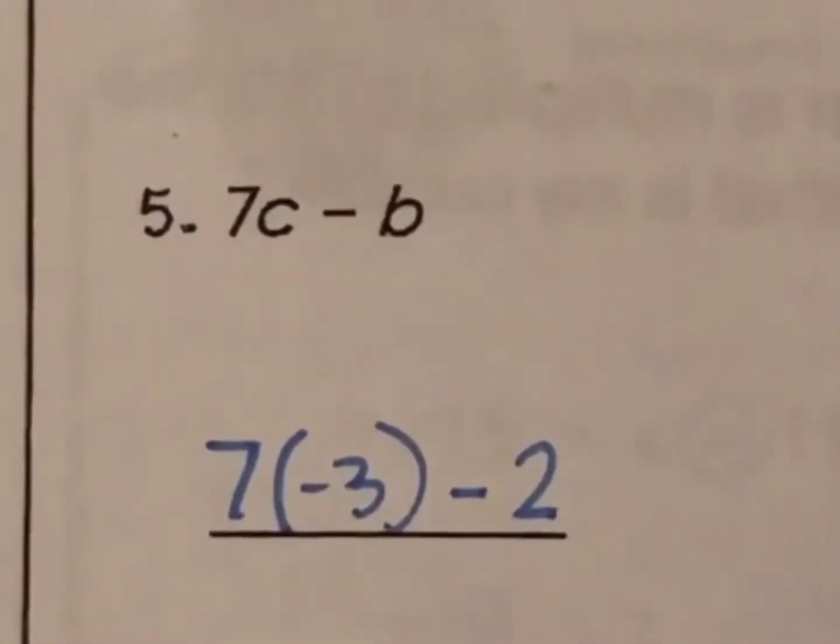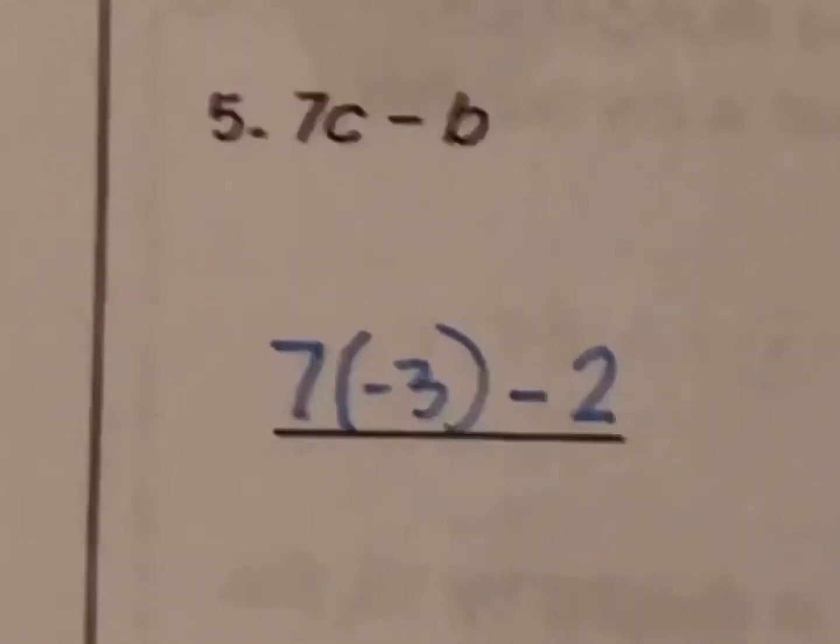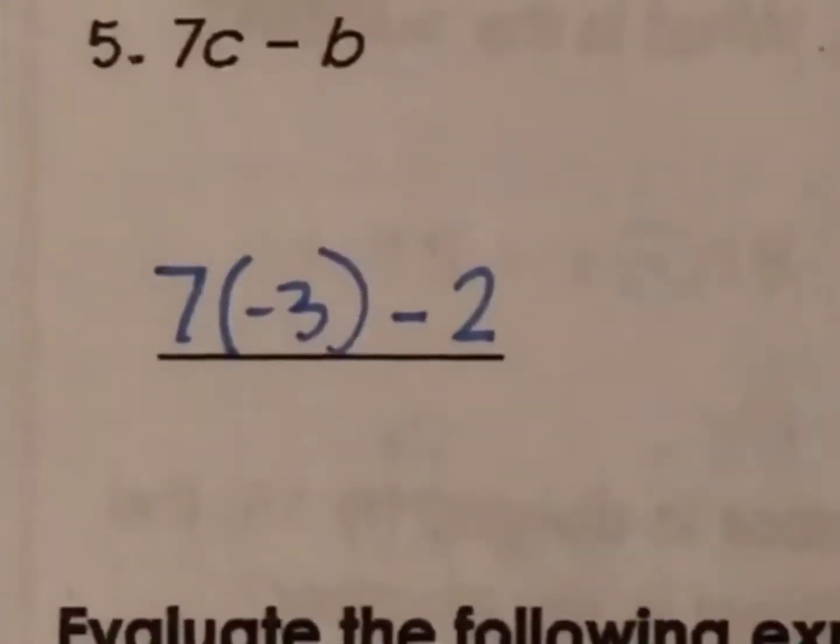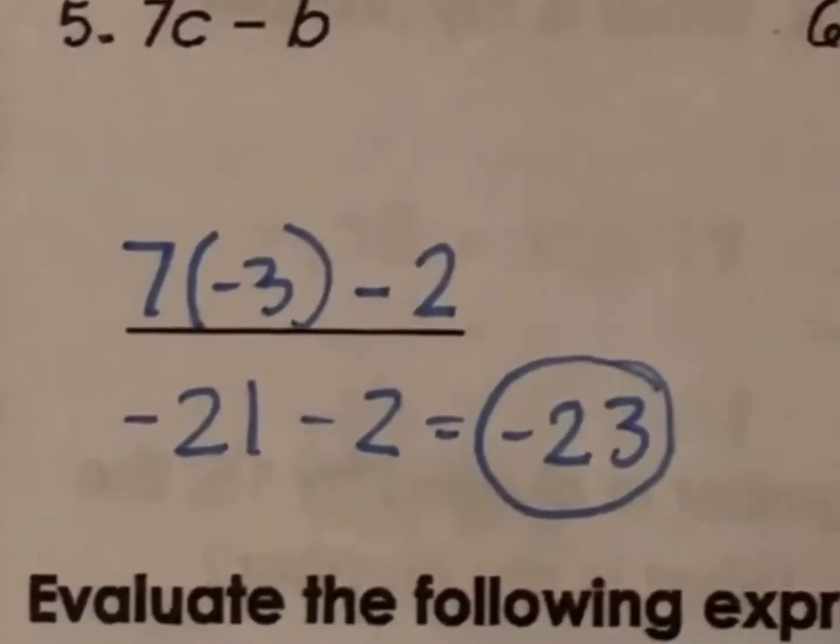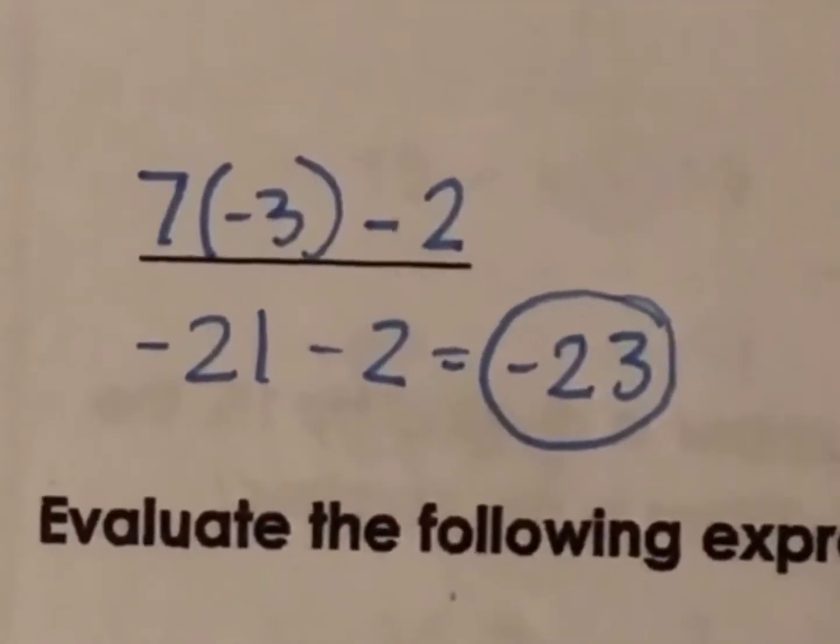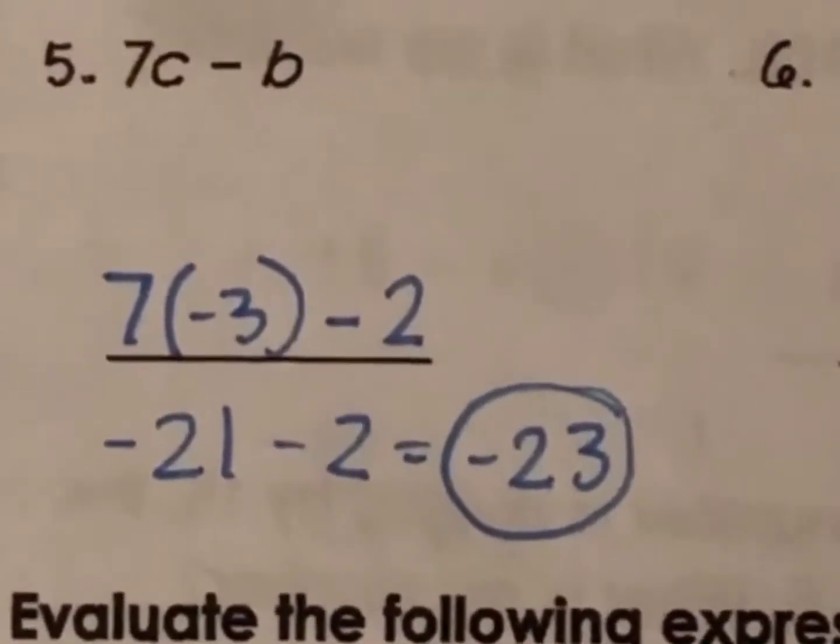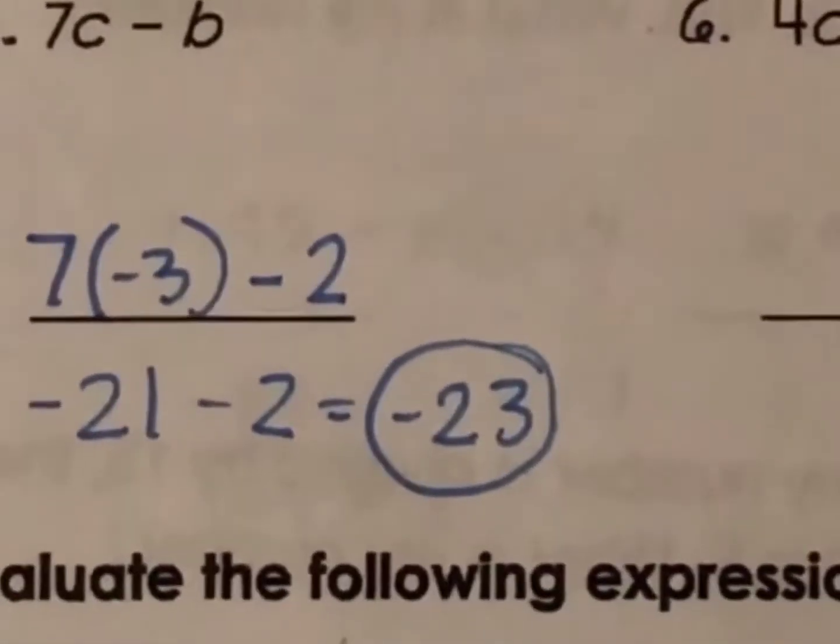The last of these that we'll do together is number 5. Again, I substitute, and I have 7 times negative 3 minus 2. Negative 21 minus 2, or you can also think of it as a negative 21 and a negative 2, which is a more effective way to think of it for algebra, ends up becoming negative 23.